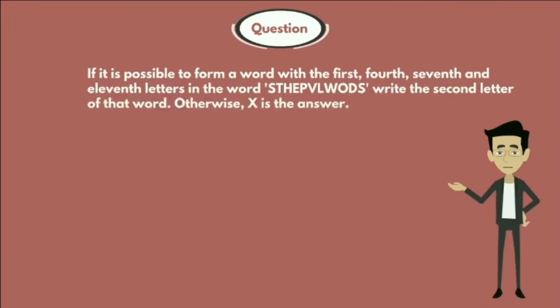Question: If it is possible to form a word with the first, fourth, seventh, and eleventh letters in the word STHEPVLWODS, write the second letter of that word. Otherwise, X is the answer.